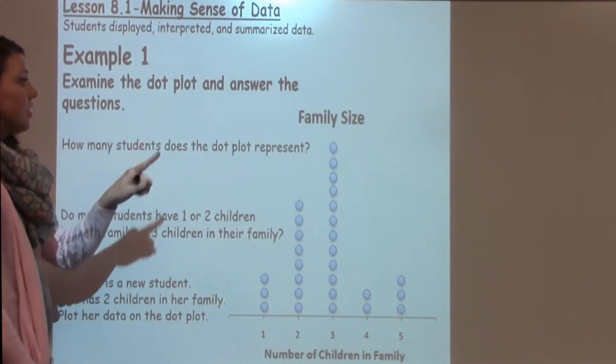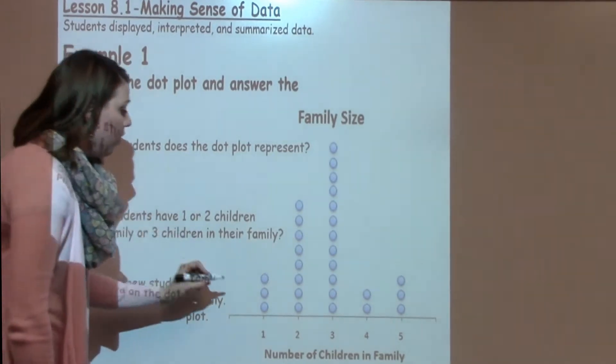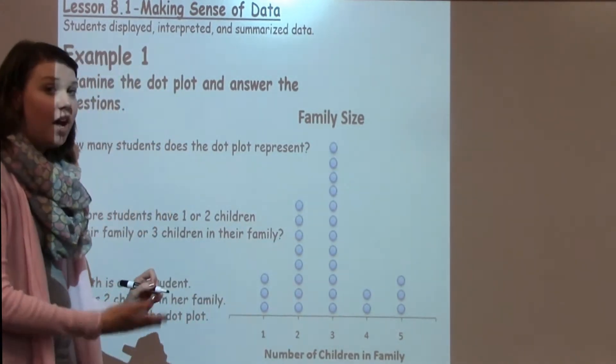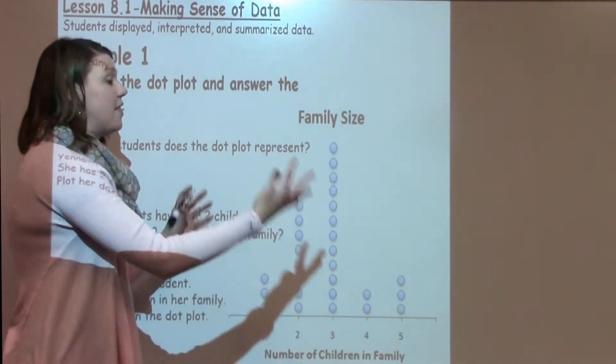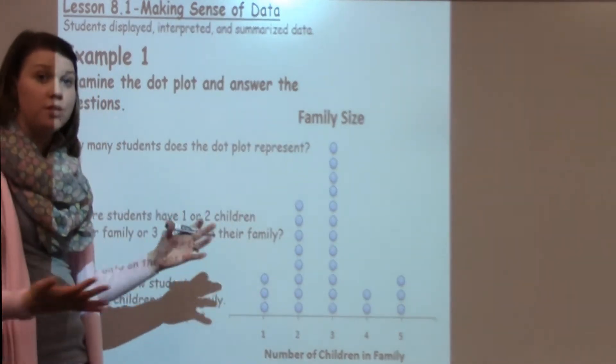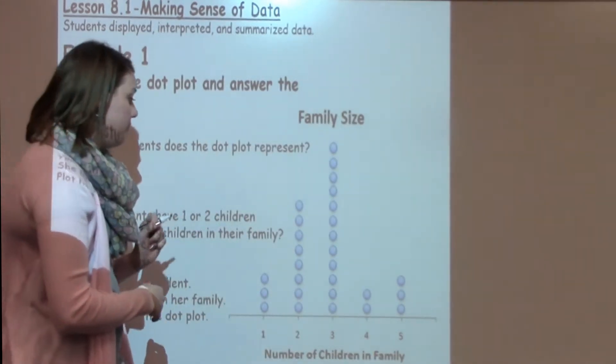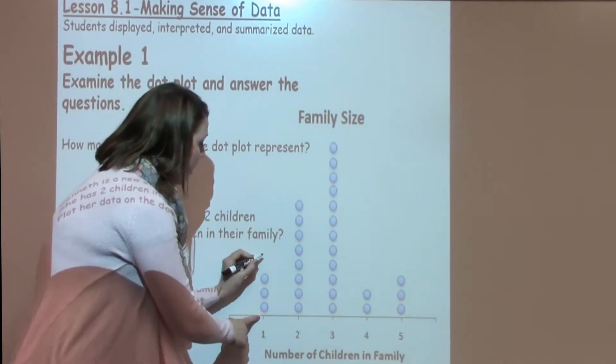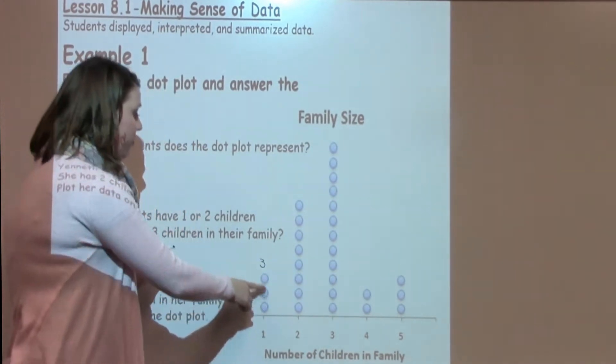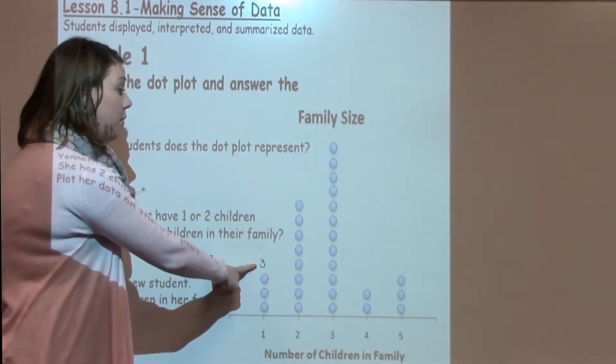To figure out how many students the dot plot represents, we're going to look at how many dots are in each of the columns and then add those to figure out how many students are completely displayed in this dot plot. So I look at this first one, I know I have three. I always like to write my numbers on top in case I need to use them multiple times.